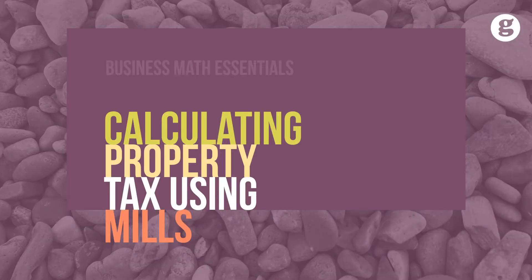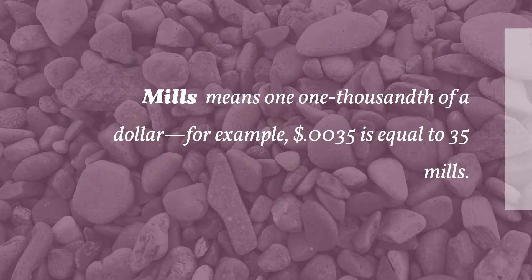Let's take a look at calculating property tax using mills. Mills means one one-thousandth of a dollar. For example, .0035 cents is equal to 35 mills.